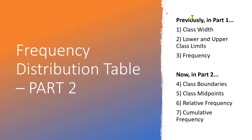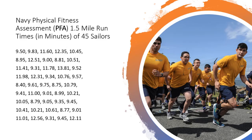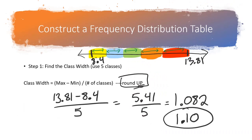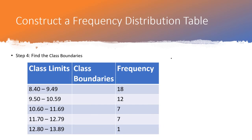In this video we're going to continue our discussion on frequency distribution tables. Previously we talked about how to calculate the class width, the upper and lower class limits, and we found the frequency. Now we're going to build onto that table and find class boundaries, class midpoints, relative frequencies, and cumulative frequencies. We had data on 45 members of the Navy and their 1.5-mile run times, and we divided up the data into classes and calculated the frequencies.